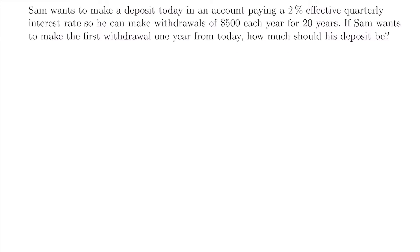We're working with the present value of an annuity here because we want to know how much Sam needs to deposit today in order to make withdrawals of $500 each year for 20 years. The present value is equal to some payment X multiplied by this notation: A, then N (the number of payment periods), then a bar, then I to represent our interest rate that has the same frequency as our payment period.